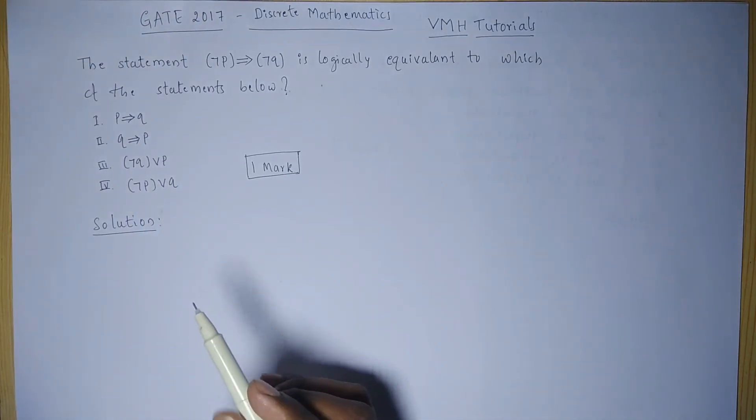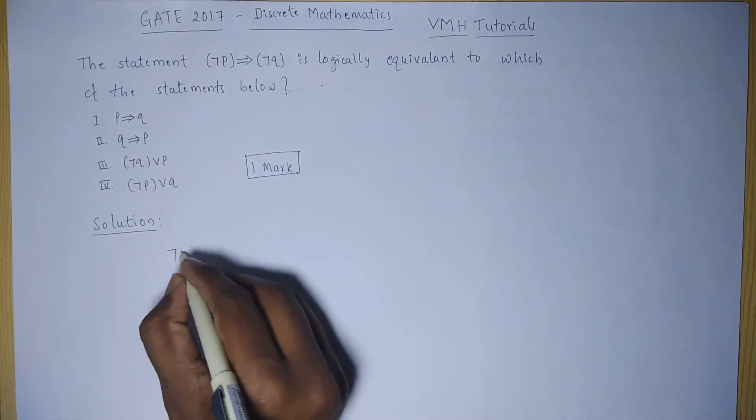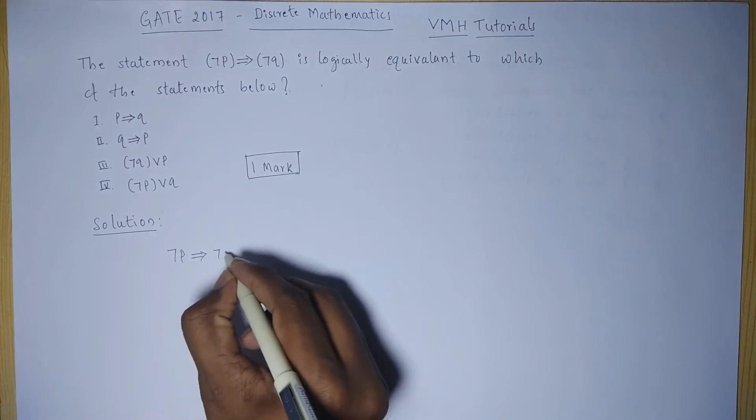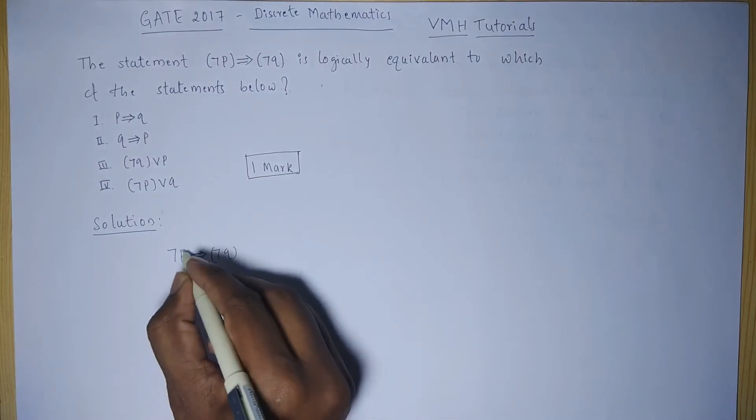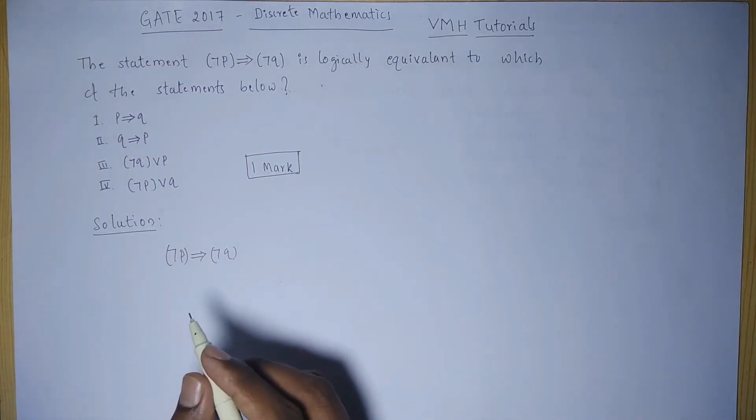Now, if you look at the problem statement or the given statement, that is, negation of P implies negation of Q, we know that the implication is always equivalent to its contrapositive.